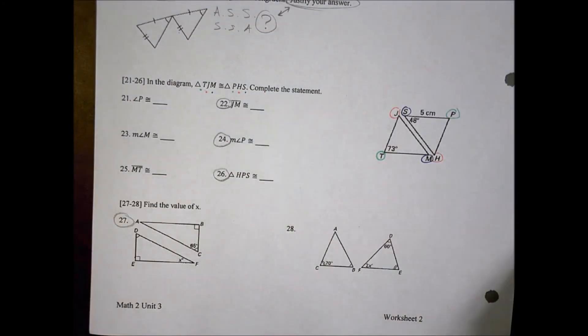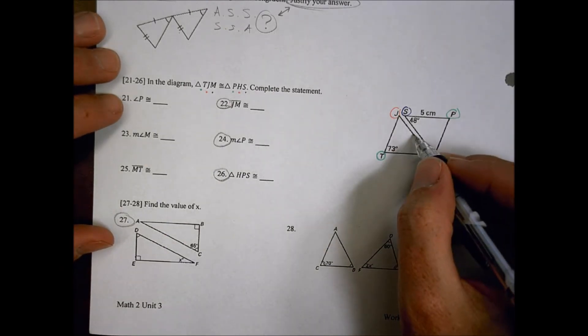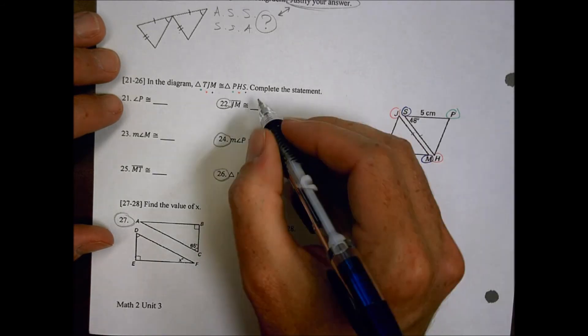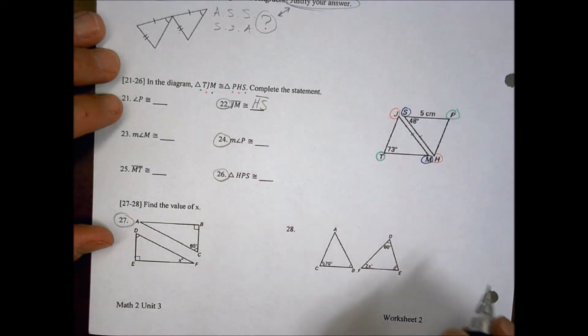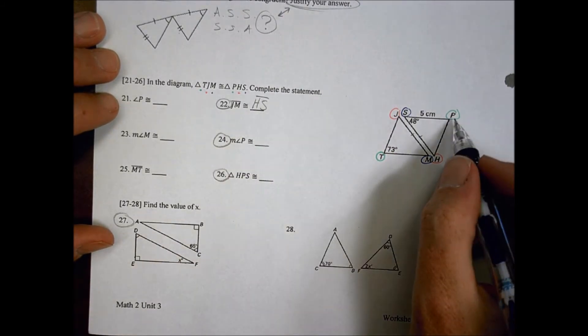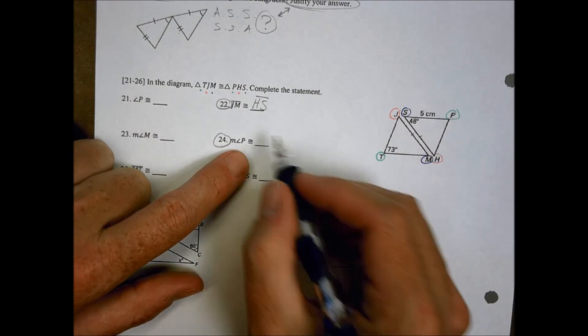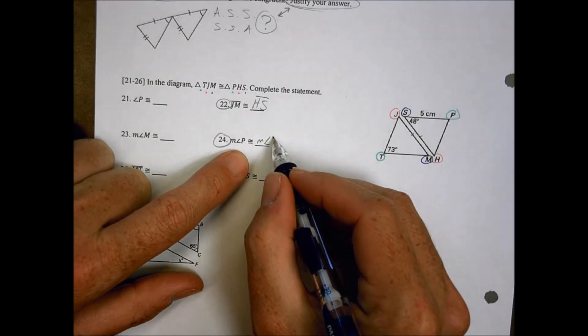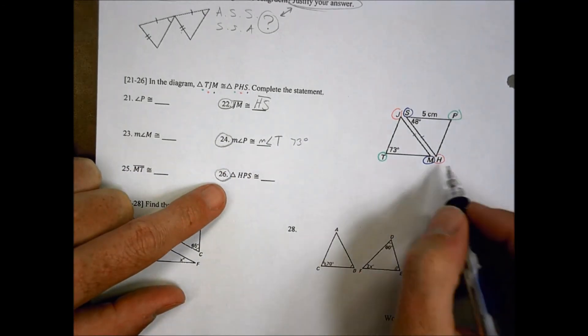So let's take a look at what we have now. So JM is this one, peach de blue, right there. And that one's going to line up with this peach de blue, which is HS. Right there, keeping my letters in the right order. For angle P, measurement of angle P, which is the green one, that's going to line up over here with a measurement of angle T, which happens to be 73 degrees.